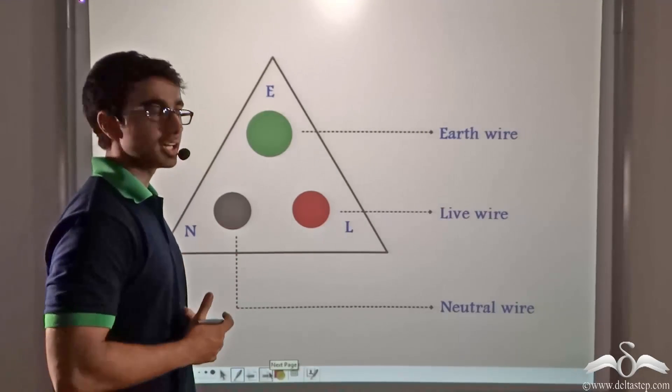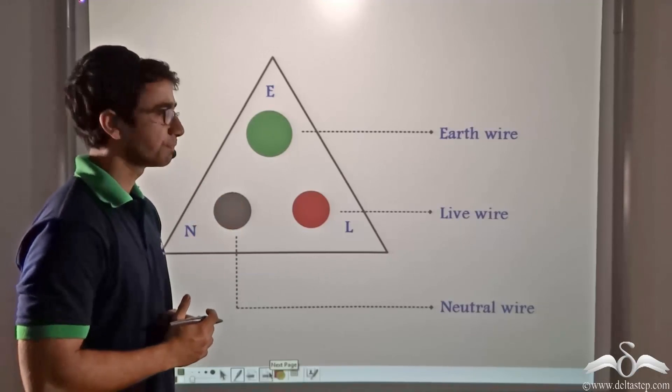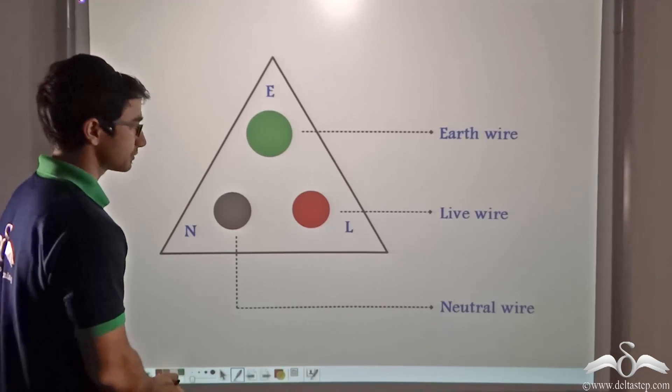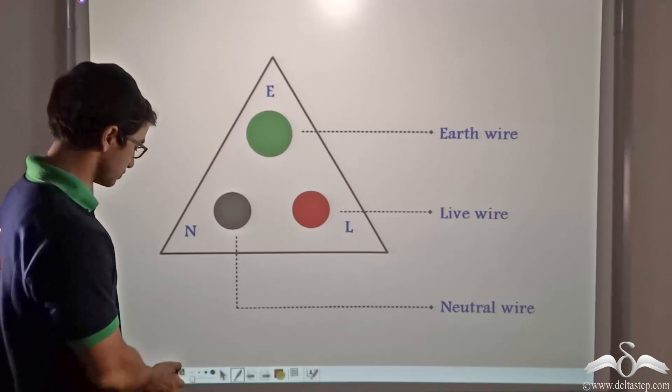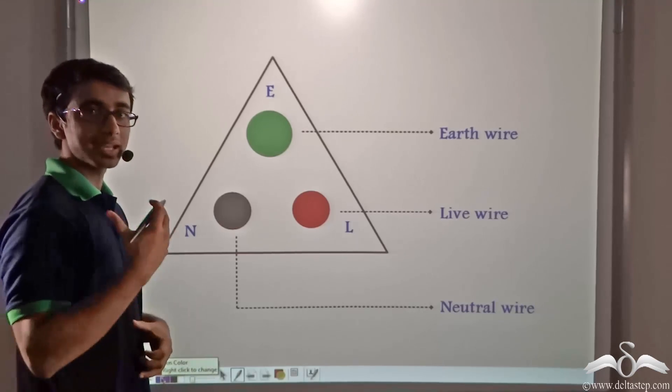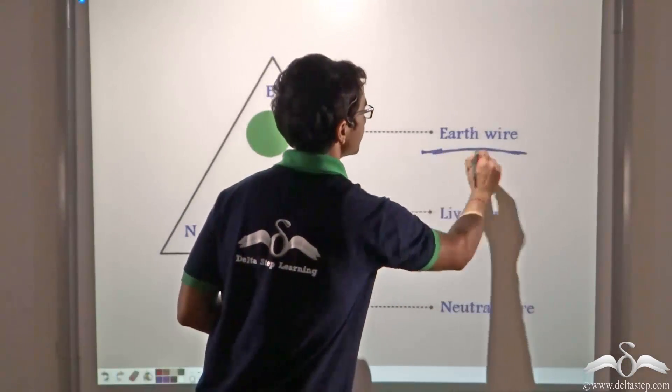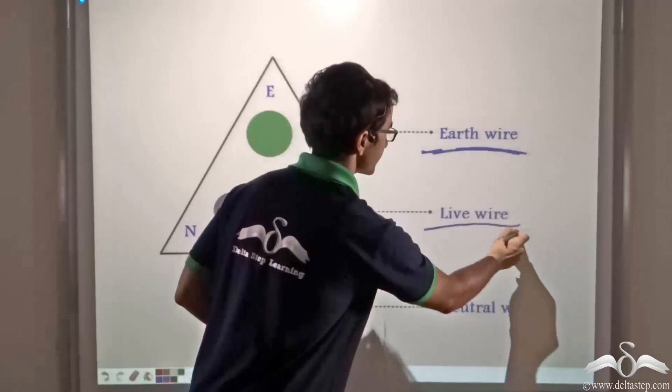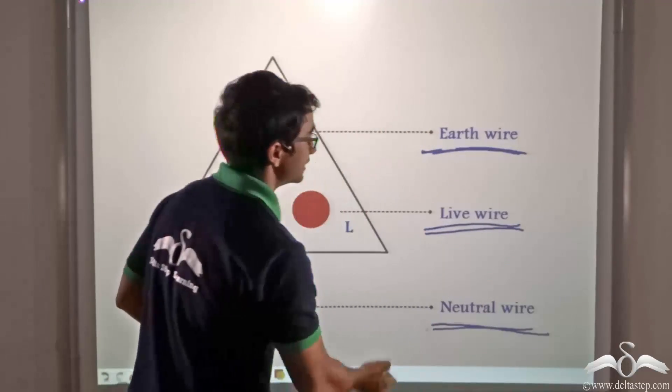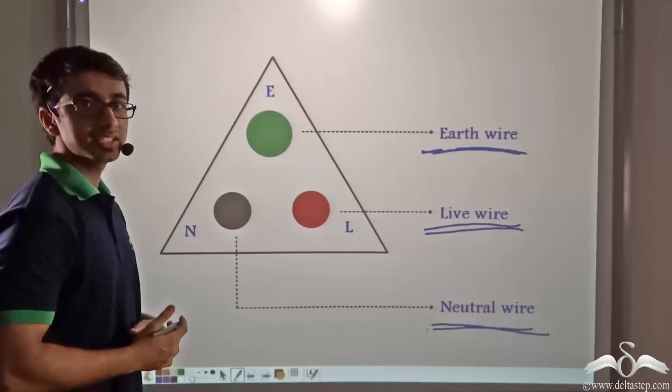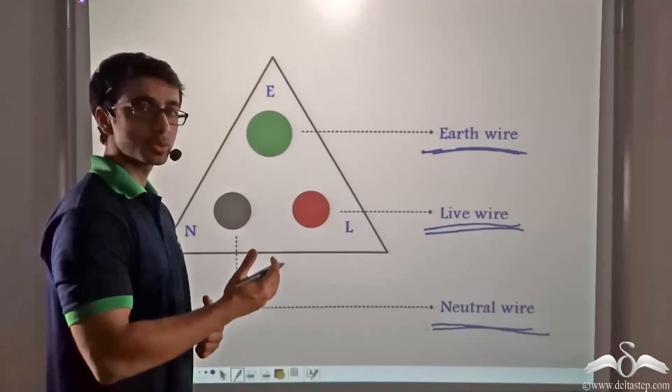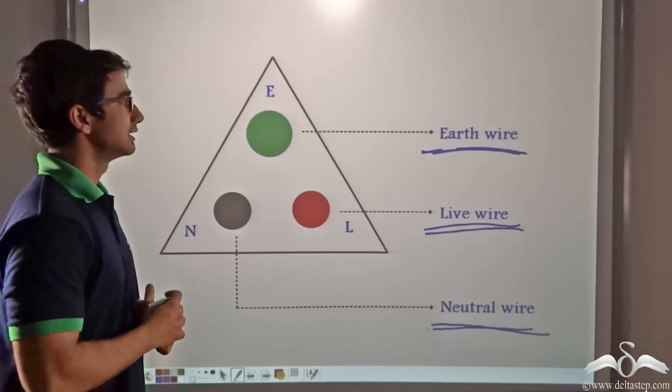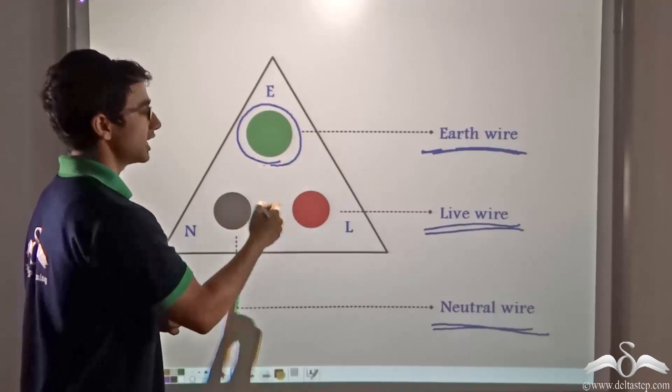So how is this earthing done? Now consider a socket that you see normally at your homes. This is a three-pin socket that is commonly used. Over here there are three parts. The first part that is responsible for the protection of the person as well as the appliance is known as the earth socket or the socket where the earth wire is inserted. The other two parts are the sockets for the live wire and the neutral wire. Now you will notice that the earth wire socket is significantly thicker than the other two.